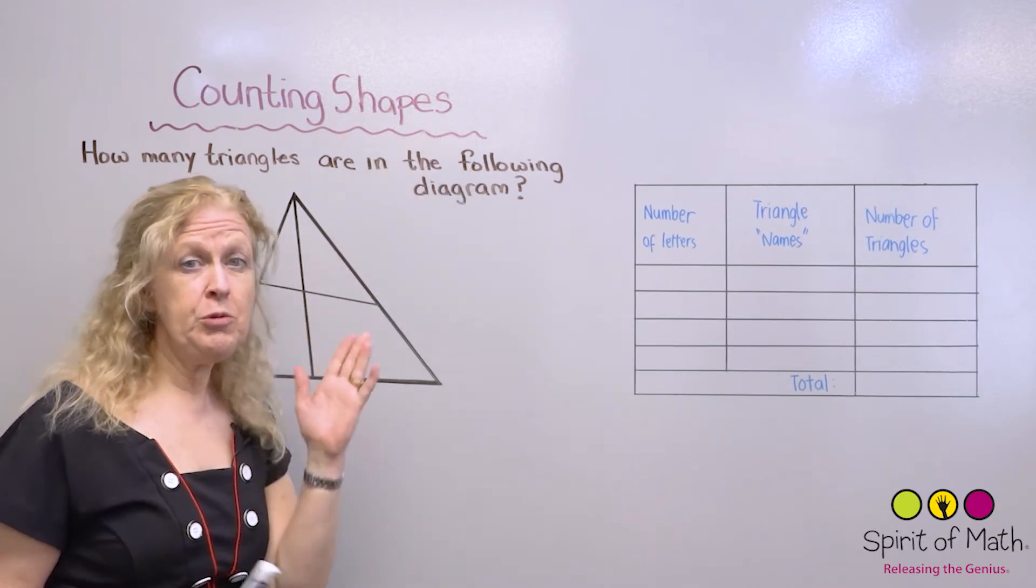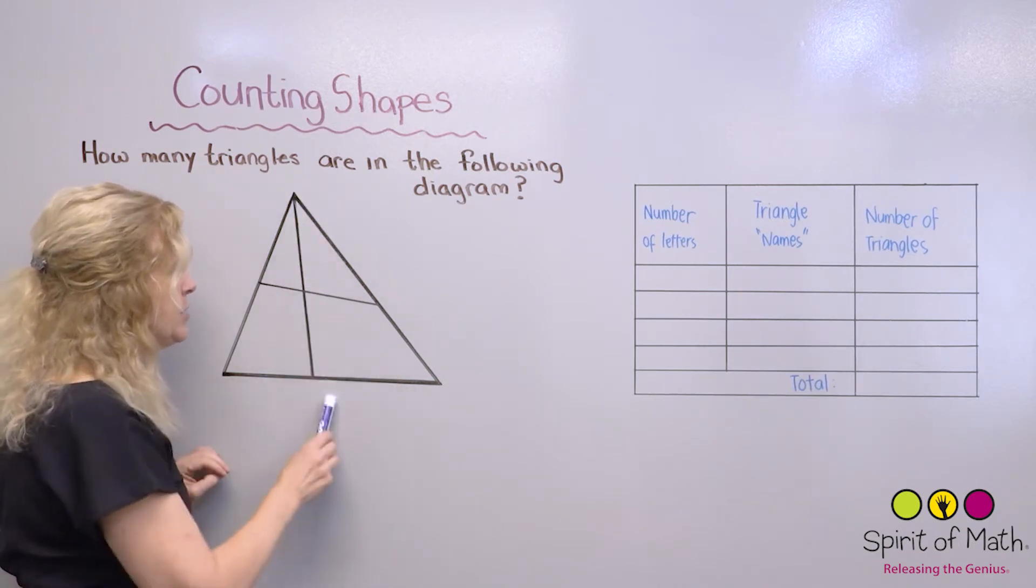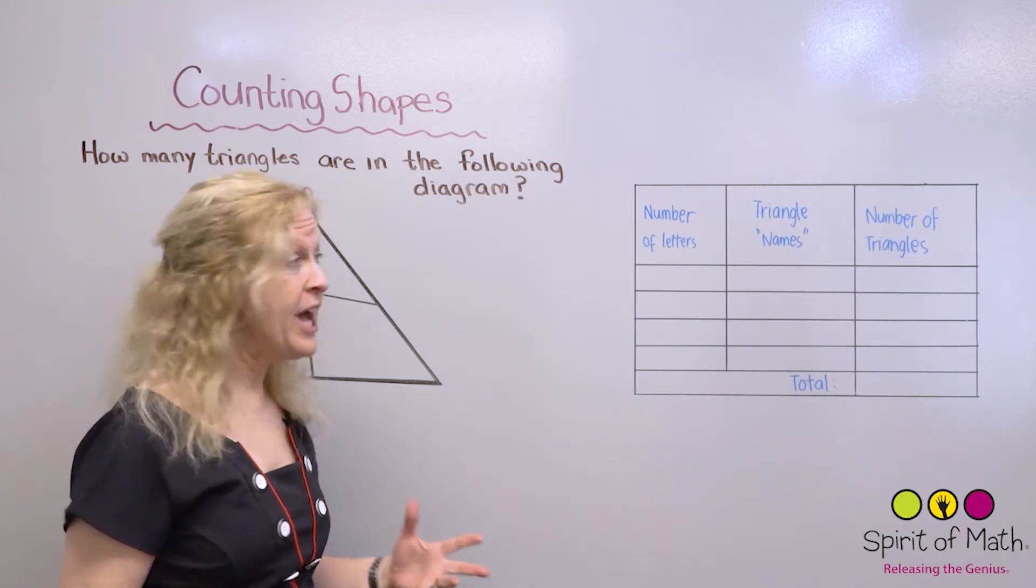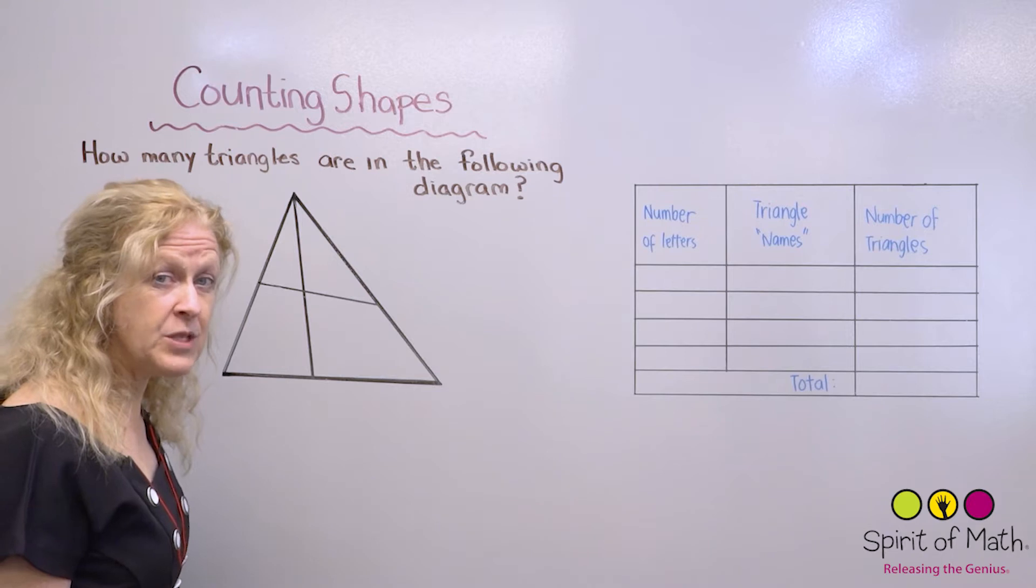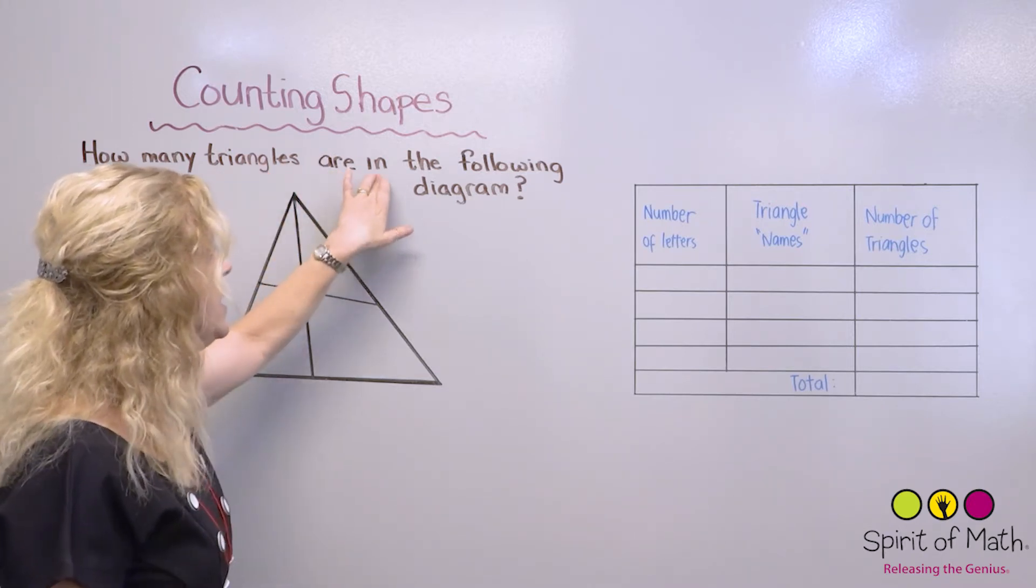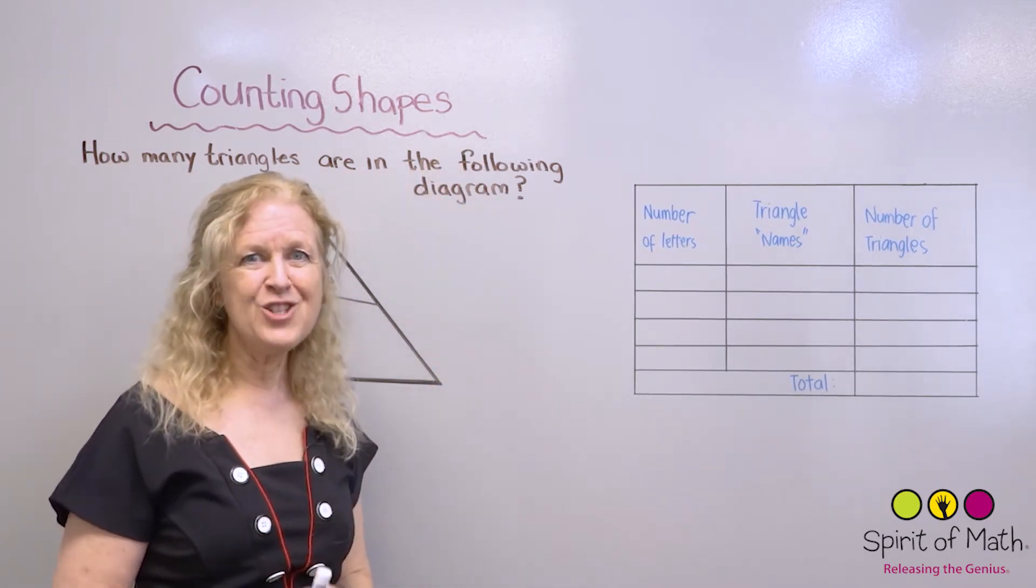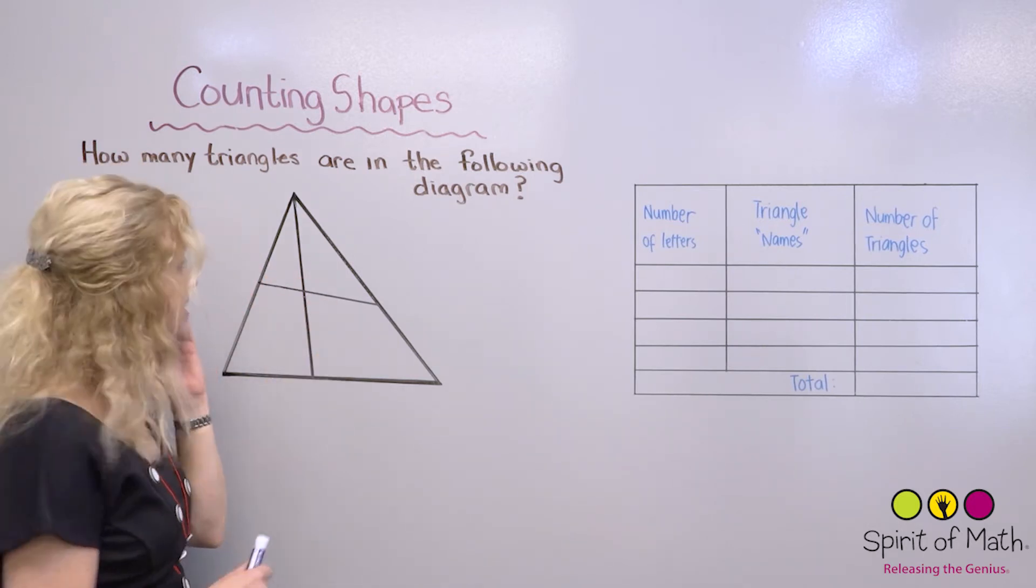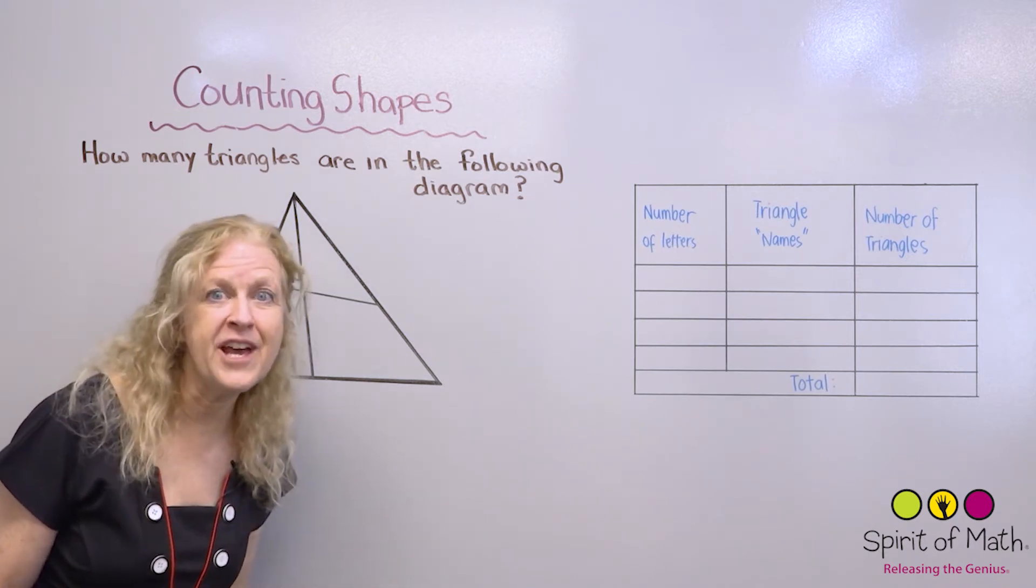So if you notice up here, there is a big triangle and then there's some lines through that triangle. In these counting shape kind of questions, they will always ask you how many of the shapes there are. In this case, it says how many triangles are in the following diagram?